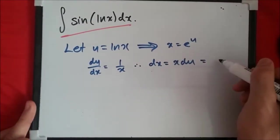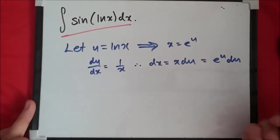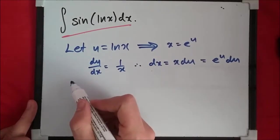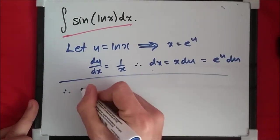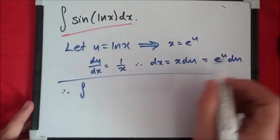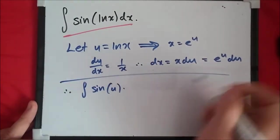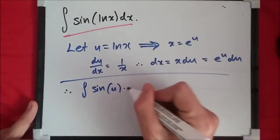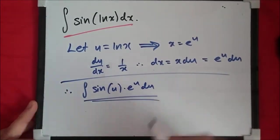Replacing it here, we're gonna have e to the power u du, and see this has become very clean. Thus our integral becomes sine of u times e to the u du after replacing terms.